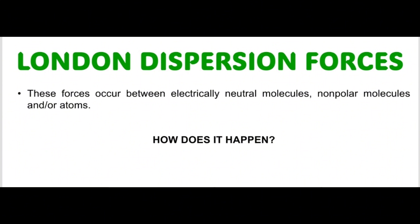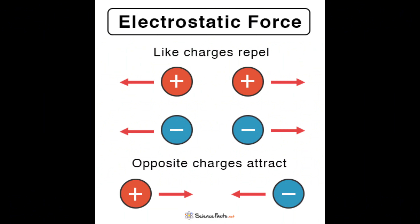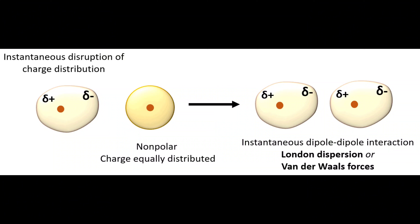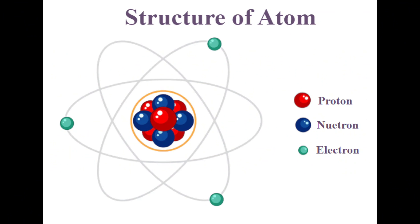This is actually due to electrostatic forces. The scientist Fritz London, a German-American physicist, recognized that the motion of electrons in an atom or a molecule can create an instantaneous or momentary dipole moment. Atoms are non-polar, meaning they possess no permanent dipole moment. But instantaneously, the distribution of electrons can differ from the average distribution.